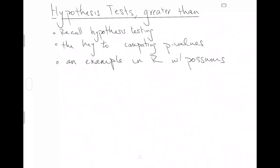This video is going to be about hypothesis testing, and it's going to be an example where the alternative hypothesis is greater than. In the first video about hypothesis tests we did an example, probably too long, where the alternative hypothesis was less than. What we're soon going to figure out through multiple examples about hypothesis testing is that really the alternative hypothesis is the hypothesis where you have a choice about what kind of comparison you want to make.